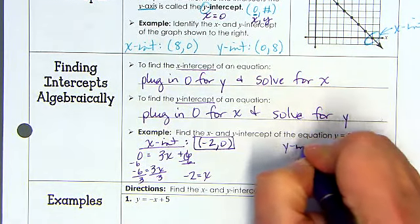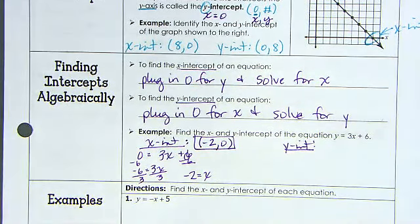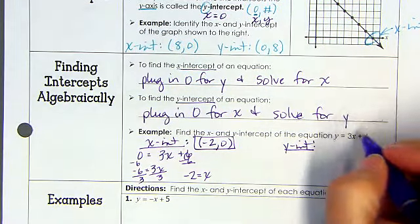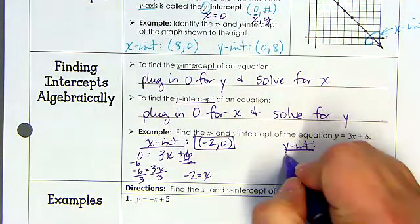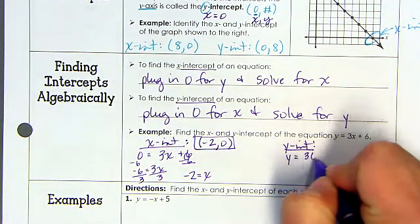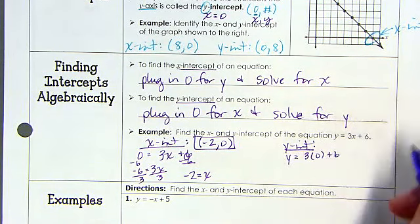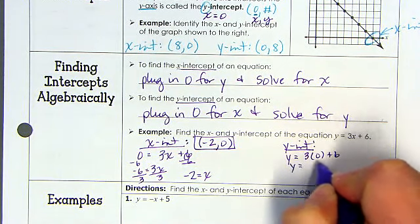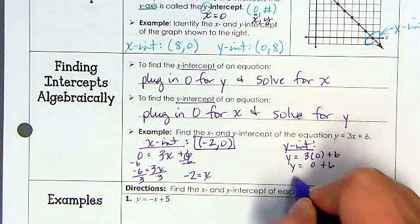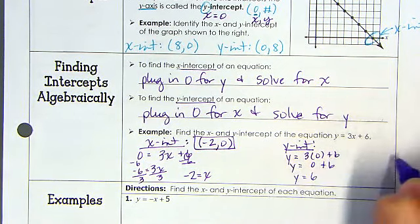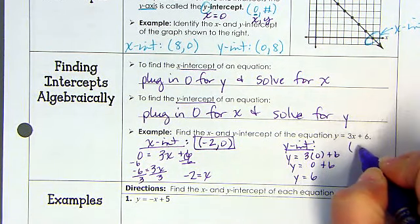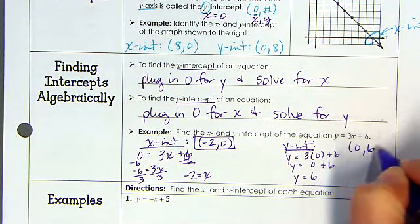For the y-intercept, and yes, we know when it's in this equation to automatically pull it out, we have to show mathematically how this works. So we're going to plug in 0 for x. So I'm going to have y equals 3 times 0 plus 6. And we end up with y equals 0 plus 6, which is y equals 6. So therefore, my y-intercept is (0, 6).